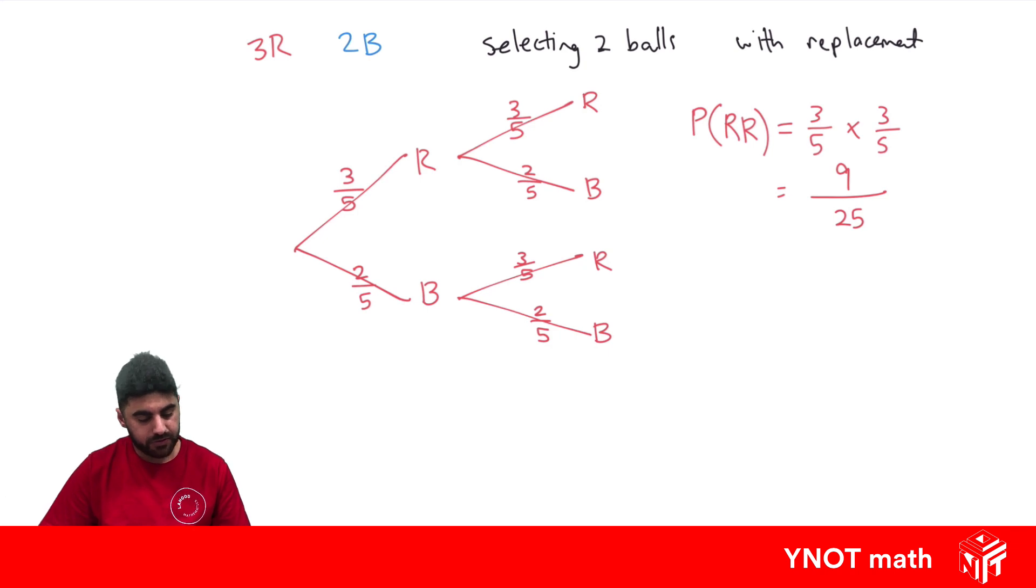But what if we got some extra information? What if you snuck a peek after the first one and saw that they pulled out a red ball first? If that was the case, we know that the first ball they selected was red. So the probability changes into a guaranteed one. And this probability changes into a zero. It's impossible because we saw they selected a red ball first.